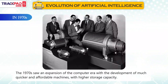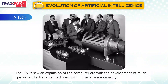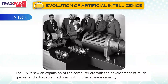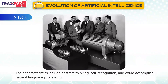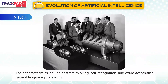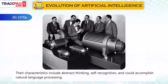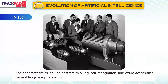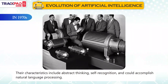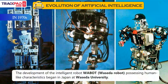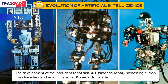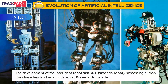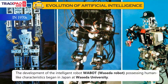In the 1970s, there was an expansion of the computer era with the development of much quicker and more affordable machines with higher storage capacity. Their characteristics include abstract thinking, self-recognition, and natural language processing. The development of the intelligent robot Wabot, a Waseda robot possessing human-like characteristics, began in Japan at Waseda University.